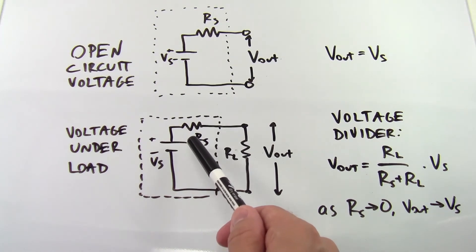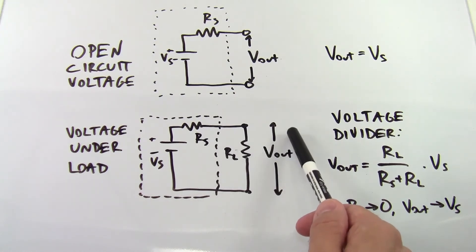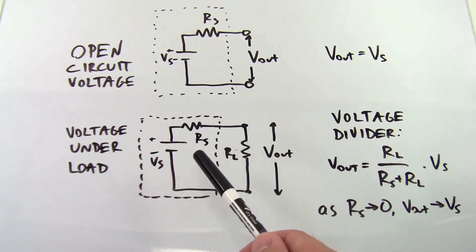But since we have current flowing through the source resistor, there's going to be a voltage drop across that resistor. That means some of the source voltage drops before you get to the load. The output voltage is therefore going to be lower than the source voltage.